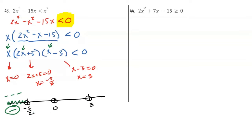Now pick a number between −5/2 and 0, like −1. Plug in −1: the x factor gives a negative. The (2x + 5) factor gives 2(−1) + 5 = positive. The (x − 3) factor gives −1 − 3 = negative. So negative × positive × negative makes a positive. I don't want positive, so I don't like that interval.